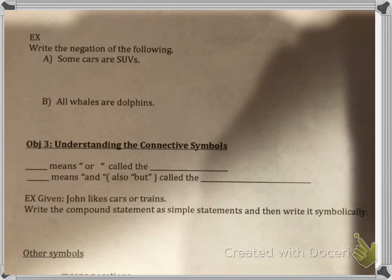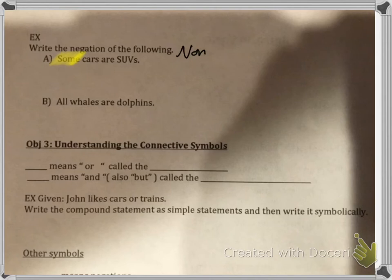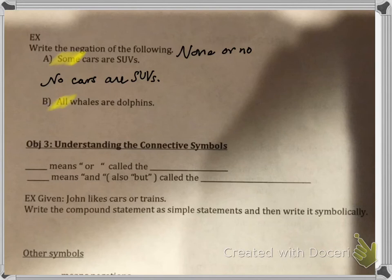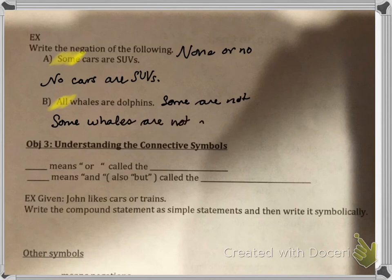Here's the next page: write the negation of the following. 'Some cars are SUVs.' I'm going to highlight the quantifier 'some.' The opposite of 'some' is 'none' or 'no,' so I could say: 'No cars are SUVs.' The next one has the word 'all.' We learned that the negation of 'all' is 'some are not,' so I write: 'Some whales are not dolphins.' That's the negation of those two examples.